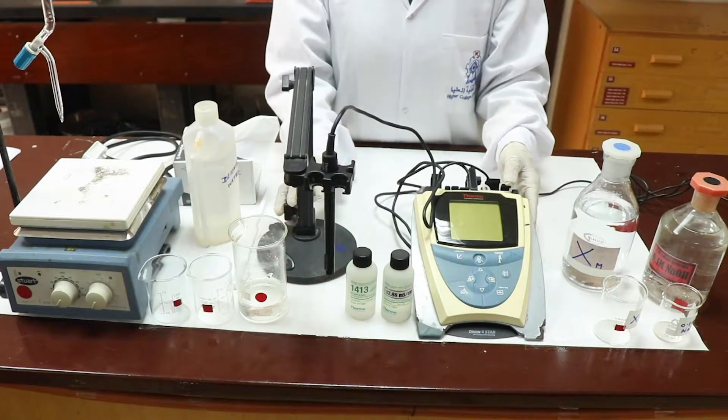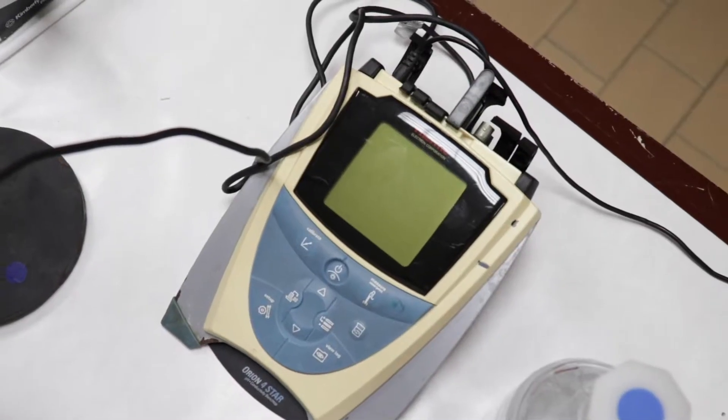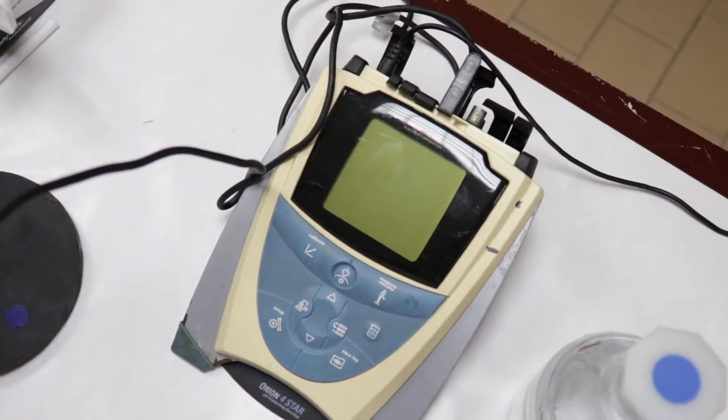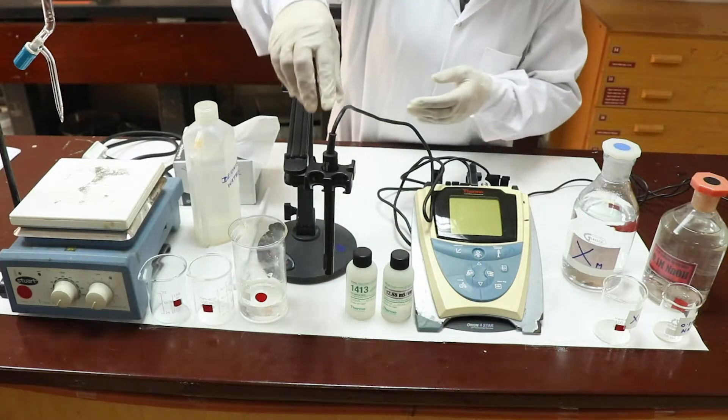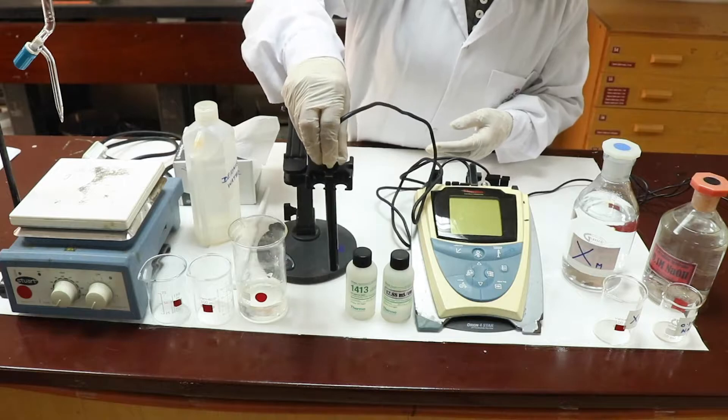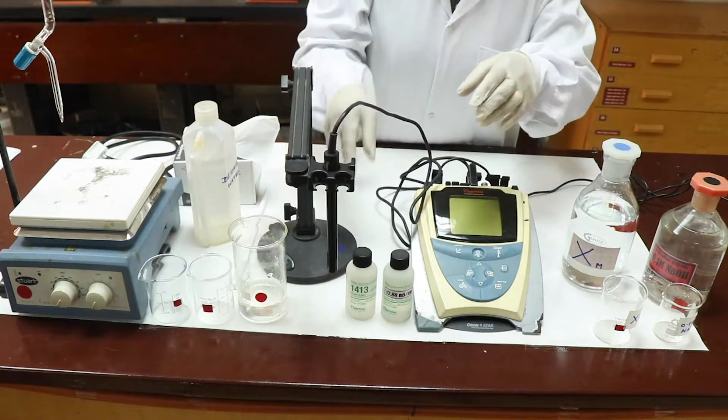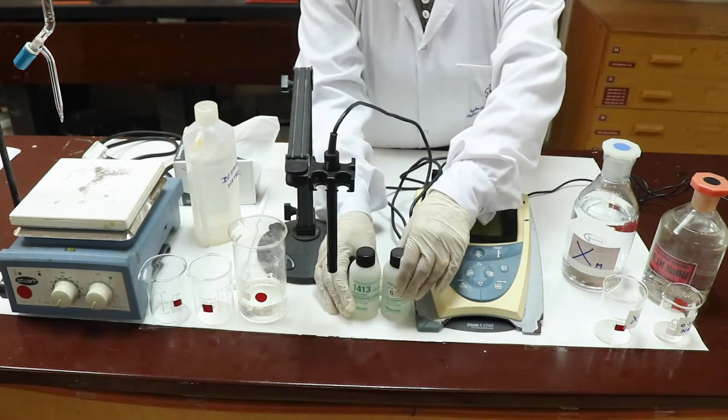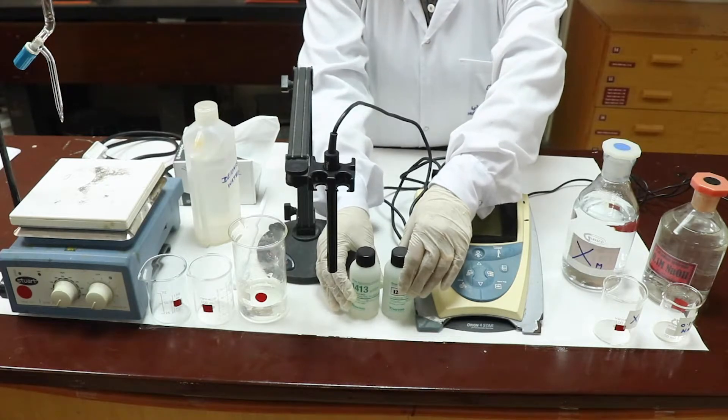You have the conductivity meter. This is multifunctional. It can be used as a pH meter as well. You have the glass electrode, the calibrating solutions whose conductivity is known for us.